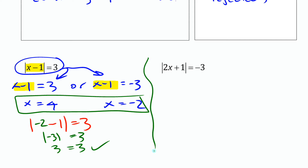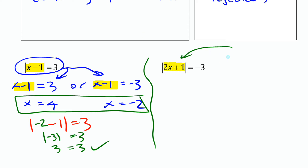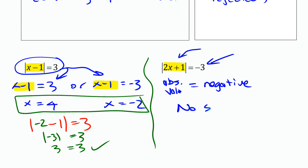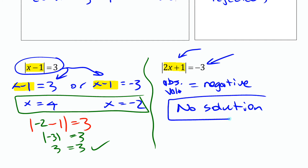This next equation says absolute value of 2x plus 1 equals negative 3. Before you go very far, notice that it says absolute value of something equals negative 3. You can't have the absolute value of something equal a negative. There's no possible number you can put in here, so this actually has no solution.